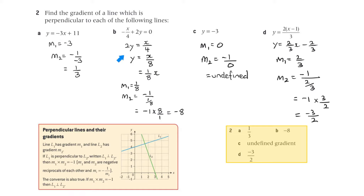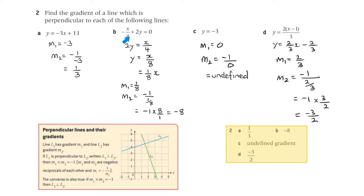Rearranging the next equation gives y equals 1 eighth x, so m1 is 1 on 8. Then m2 equals minus 1 on m1, which is minus 1 over 1 over 8. Dividing by a fraction means multiplying by the reciprocal, so it's minus 1 times 8 on 1, which equals minus 8. The gradient of a perpendicular line is minus 8.